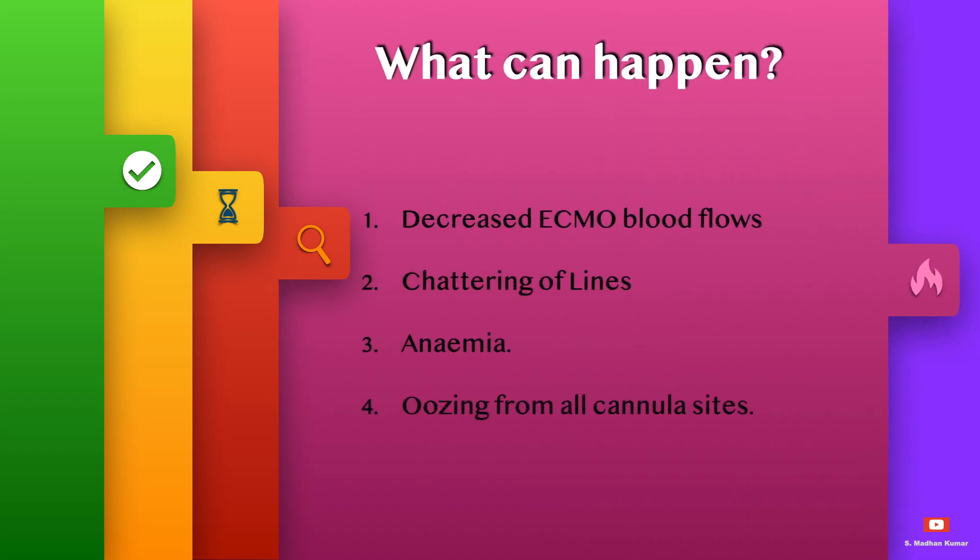When bleeding happens on ECMO, it will decrease the ECMO blood flows. Chattering of venous lines can happen, severe anemia can happen, and oozing from all cannula sites.